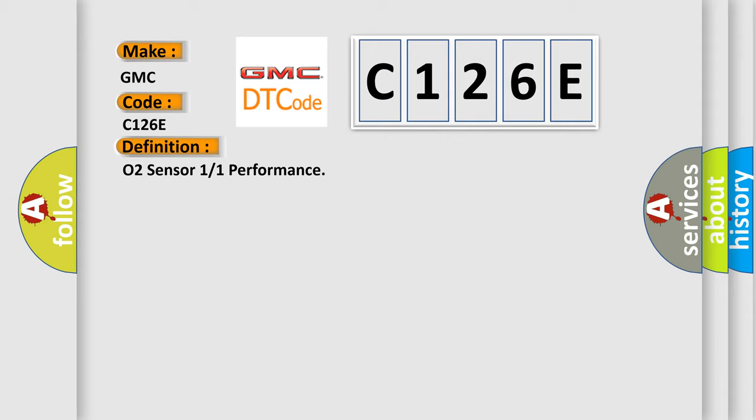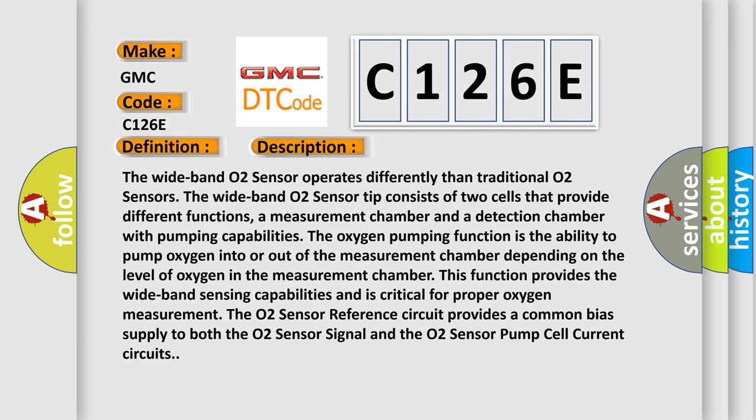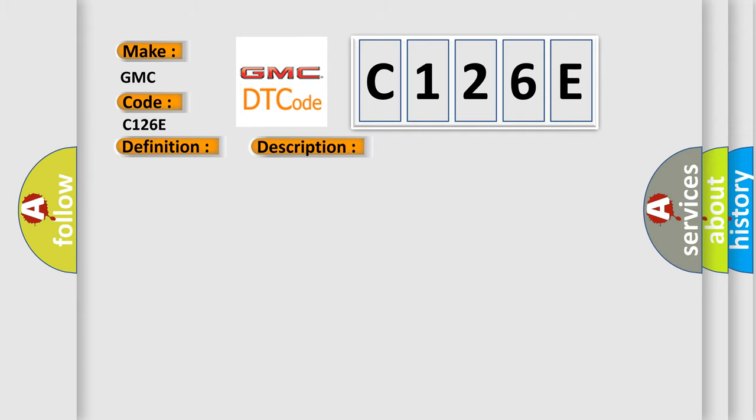And now this is a short description of this DTC code. The wideband O2 sensor operates differently than traditional O2 sensors. The wideband O2 sensor tip consists of two cells that provide different functions: a measurement chamber and a detection chamber with pumping capabilities. The oxygen pumping function is the ability to pump oxygen into or out of the measurement chamber. Depending on the level of oxygen in the measurement chamber, this function provides the wideband sensing capabilities and is critical for proper oxygen measurement. The O2 sensor reference circuit provides a common bias supply to both the O2 sensor signal and the O2 sensor pump cell current circuits. This diagnostic error occurs most often in these cases.